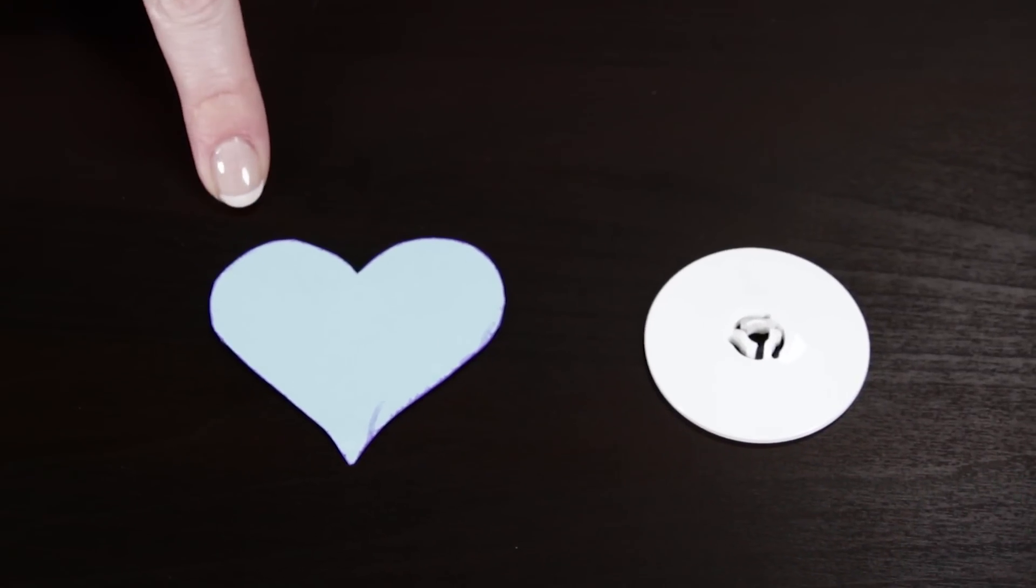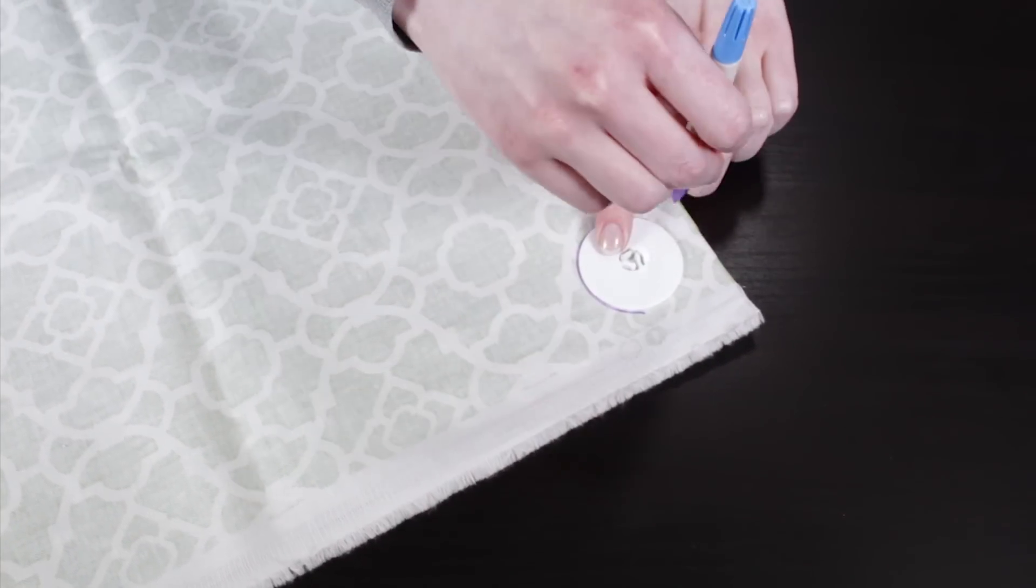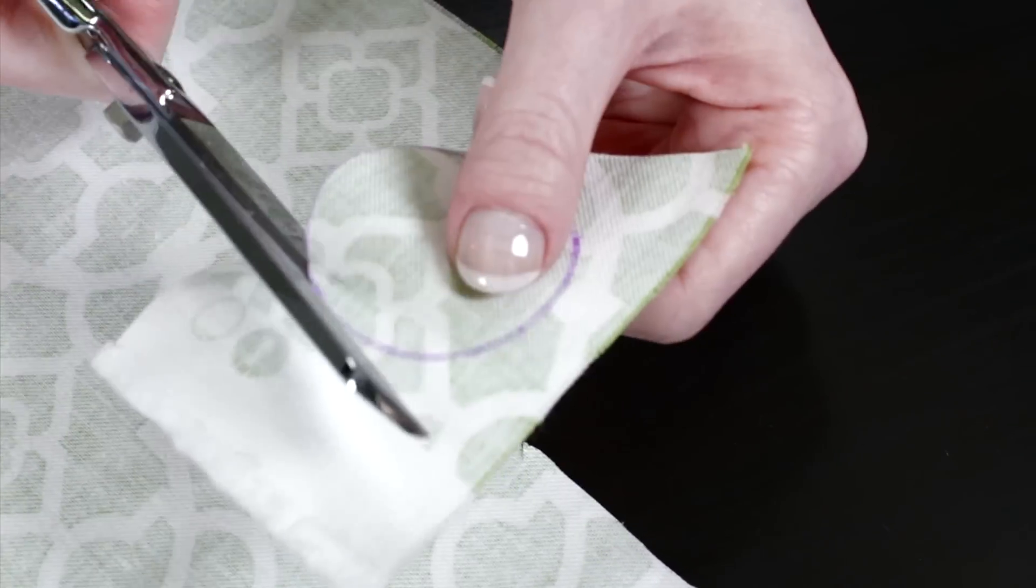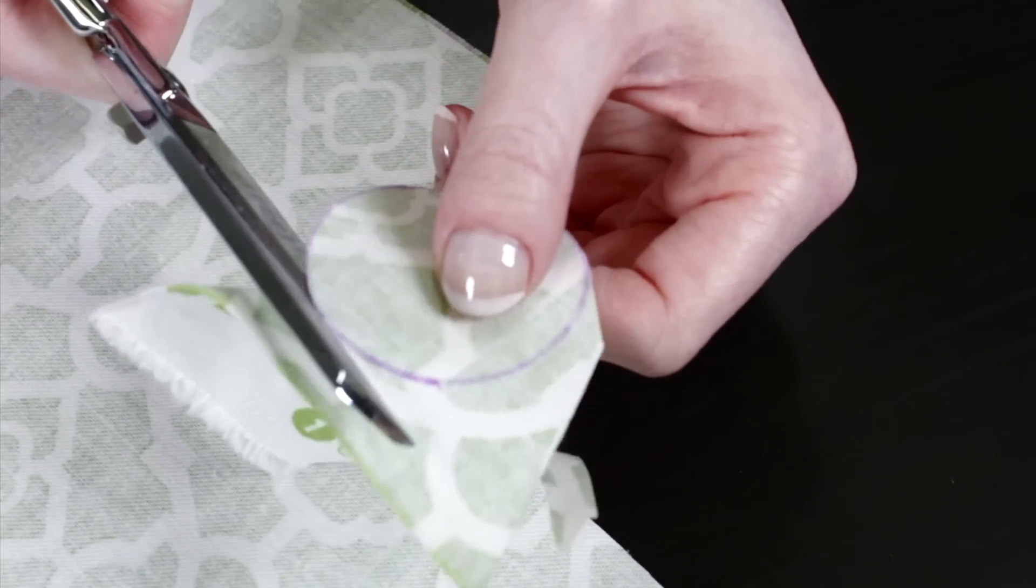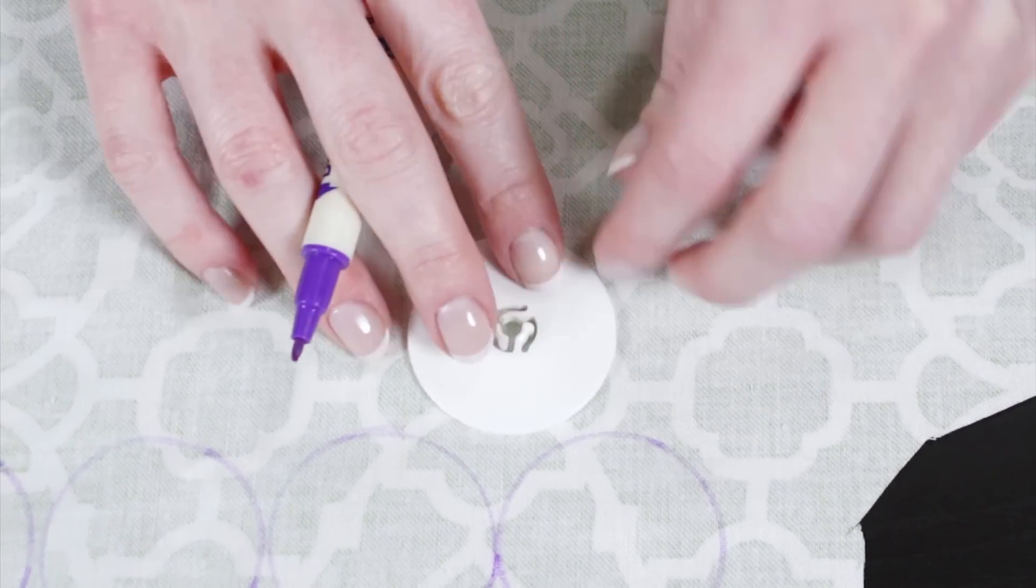First, make a template of the shape you want to use or find an object that's the right size. Circles look good no matter the occasion. Trace the shape on the back of your fabric and cut it out. Now do that again a whole bunch of times.